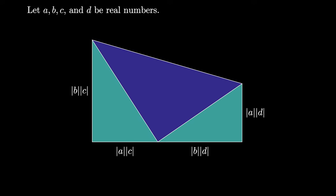We can use the Pythagorean theorem on the original two right triangles to see that the leg lengths of this new right triangle are the absolute value of D times the square root of A squared plus B squared, and the absolute value of C times the square root of A squared plus B squared.